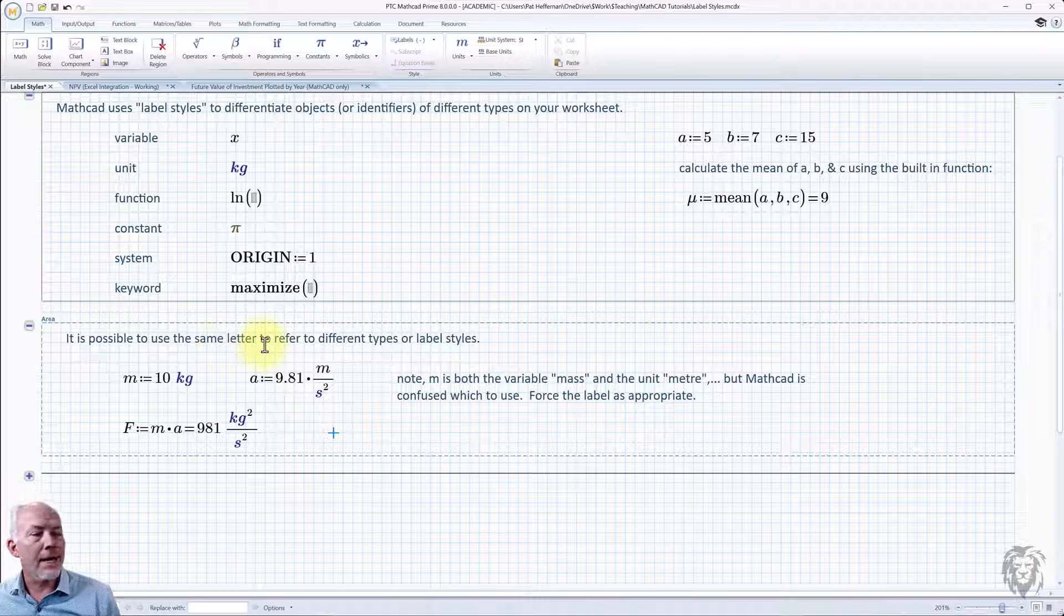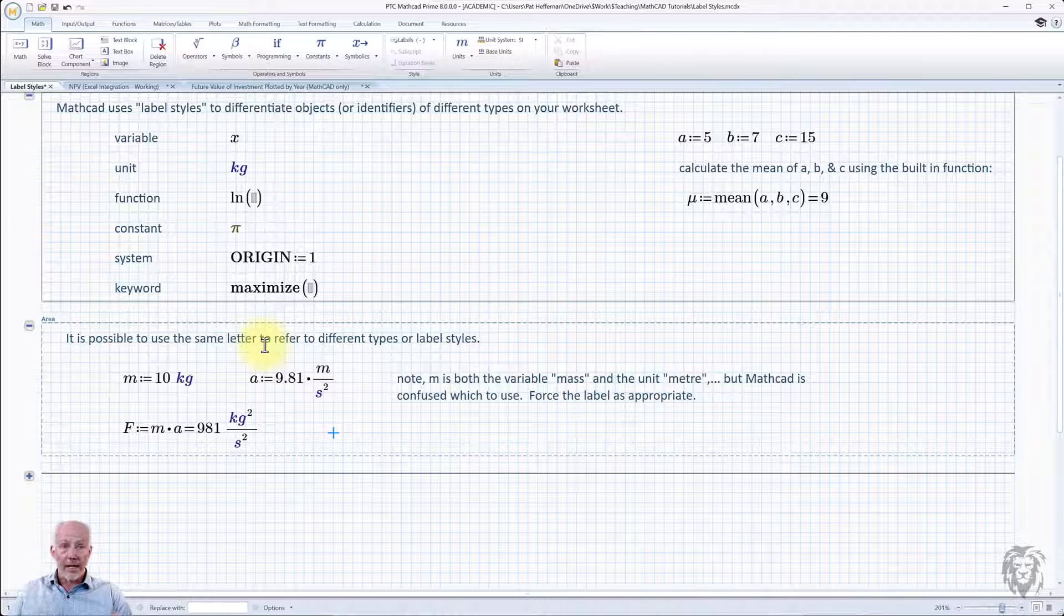So it is possible to use the same letter to refer to both a variable and a unit, a different label. And so by looking down here, what we have, so we have mass and acceleration and a calculation of the force based on Newton's law. So if we look at acceleration and we see over here, we have m divided by second squared because m is 10 kilograms over here. But m here is supposed to be a unit, supposed to be meters. And of course, if that wasn't the big giveaway that this is not blue and bold, then down here we see that the calculation is all messed up because this is not in the units of force, and need to fix it up.